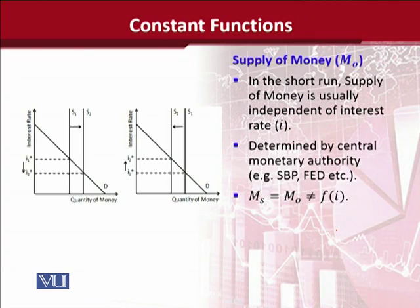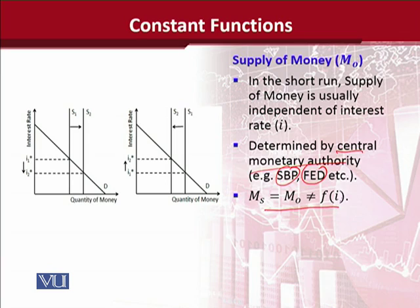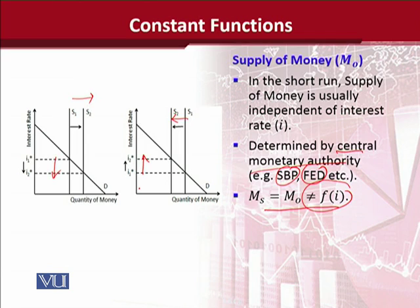An example from the money market is money supply, because it is mostly a stable variable — if not constant — especially in the short run. When this happens, we can expect it to be constant, as it is controlled by central monetary authorities like the State Bank and the Federal Reserve. It is likely to be independent of the level of interest rate. Instead of MS we can write M0 to show the autonomous behavior of money supply. The diagram shows that in the first case the supply of money has increased, independent of changes in interest rates, and in the second case the supply is decreasing due to non-interest factors, again independent of any changes in the interest rate. This is how we can observe changes in constant functions in the case of the money market.